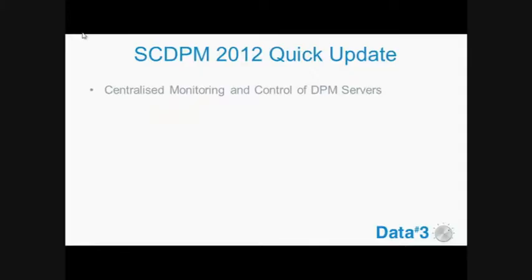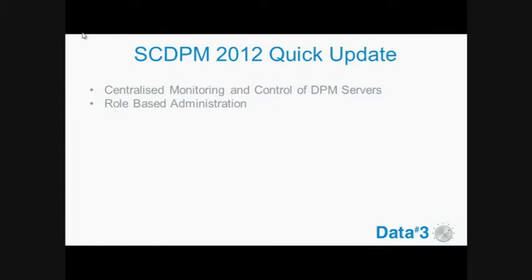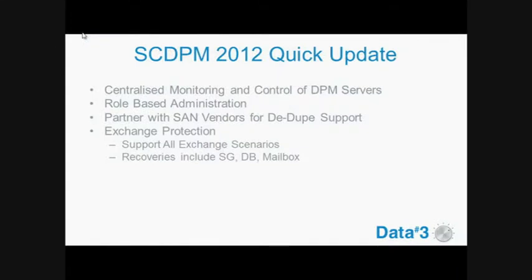So 2012 brings central monitoring and control of your DPM servers. That was one of the challenges previously — if you needed to make changes to all your DPM servers, you would need to connect to each one individually. Now there's a centralized monitoring console that can be installed on clients as well for management. The Ops Manager Management Pack has been enhanced, so you get a lot more detail about the health and performance of your DPM servers. It includes role-based administration, and they've partnered with a number of SAN vendors to support data deduplication — you'll see a lot of talk about that when Windows Server 2012 comes out. It's an updated single-instance storage technology, and utilizing it in your backups means significantly less storage space when backing up to disk and offloading to tape.